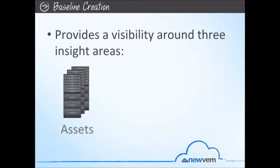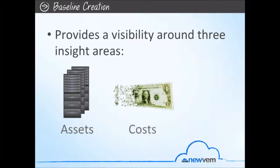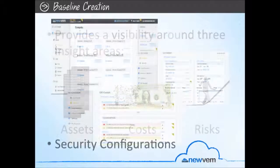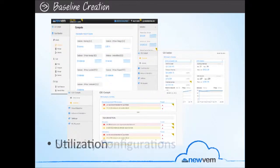Assets: what assets are you currently running in the cloud, organized around compute, storage, and network? Costs: what are you spending on these assets? Risks: what potential operational risks are you currently vulnerable to for the following areas — security configurations, utilization, and fault tolerance?